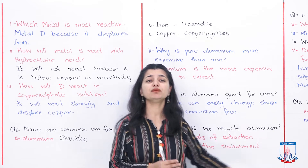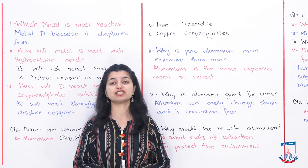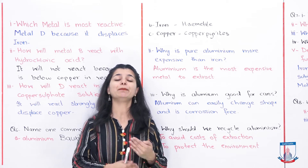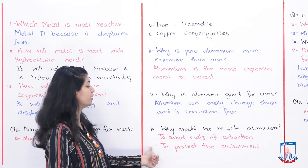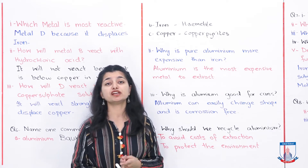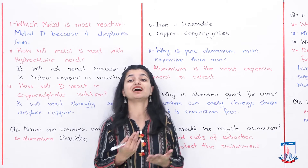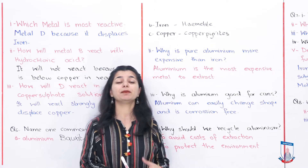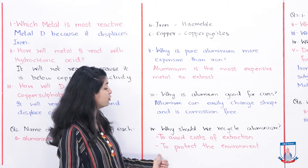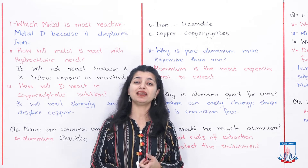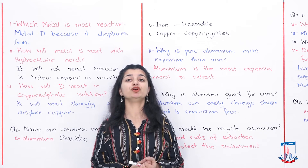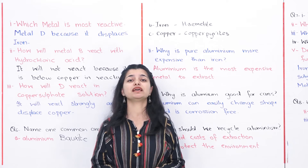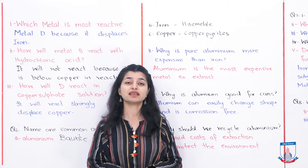The last part of question 6 asks: why should we recycle aluminum? The first reason is to avoid the high cost of extraction. Because aluminum is so expensive to extract — including the purification and separation steps — recycling it avoids those large costs. We can simply reuse aluminum in recycled form instead of extracting it again. The second reason is to protect the environment. Mining and extracting metals consumes a lot of energy and resources and causes environmental damage, so recycling and reusing materials is much better for the environment.